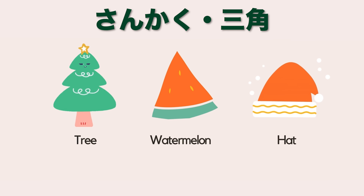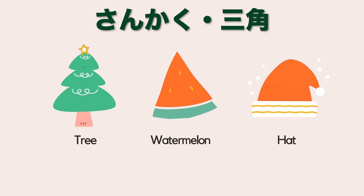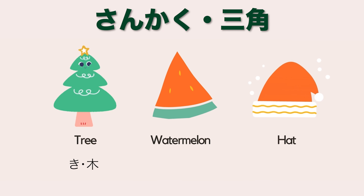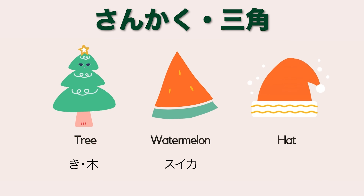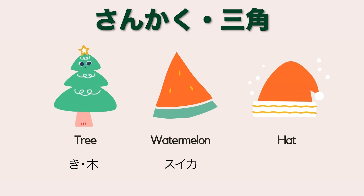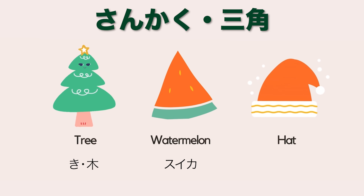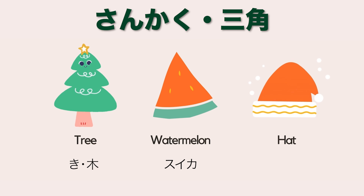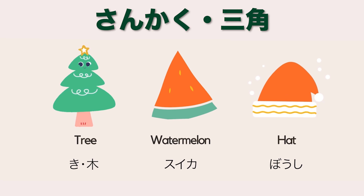San-kaku — triangle: Tree. Watermelon — Suica. Hat — Booshi.